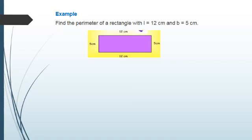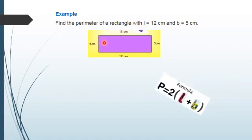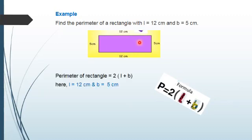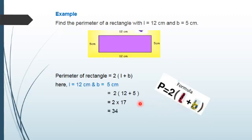Now in this example, we will find the parameter of a rectangle with the length of 12 cm and a breadth of 5 cm. We know the formula of the parameter is 2 times (length plus breadth). For this rectangle, we have length 12 cm and breadth 5 cm. We put these numbers in the formula: 2 times (12 plus 5). First we add 12 and 5 to get 17, then we multiply 17 by 2, which equals 34. Therefore, the parameter of the rectangle will be 34 cm.